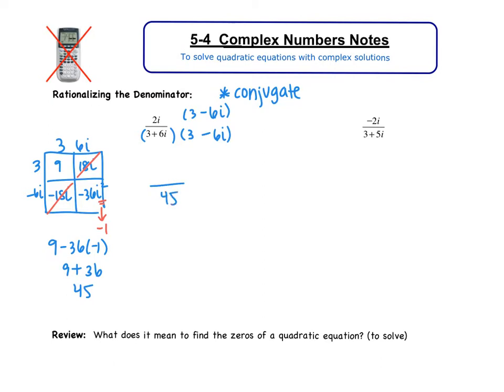In that denominator we have 45. In the numerator we need to distribute, so we're going to distribute that 2i. We get 6i minus 12i squared. Now remember, you're not done. A complex number has i, but a complex number does not have i squared. So you've got to replace that i squared with negative 1.